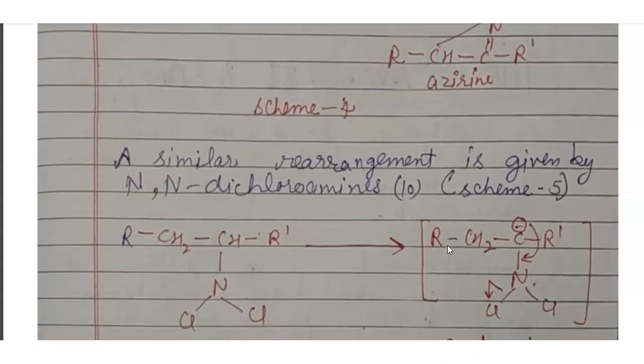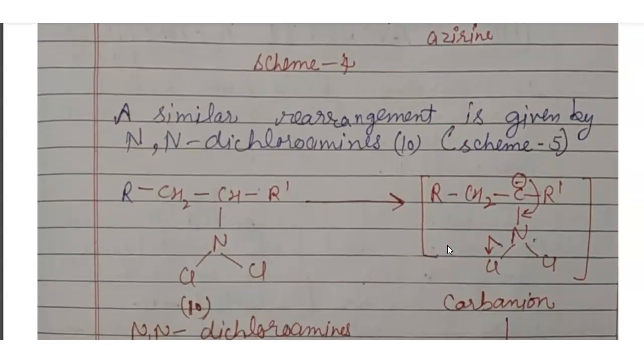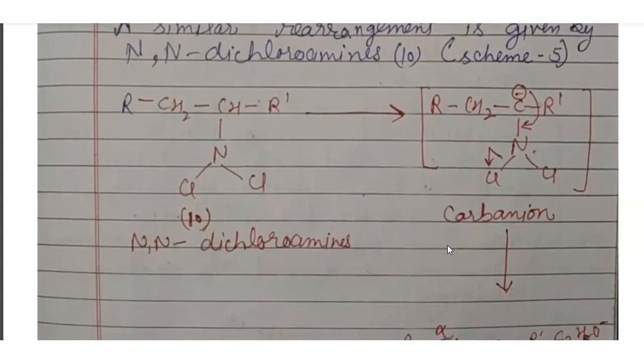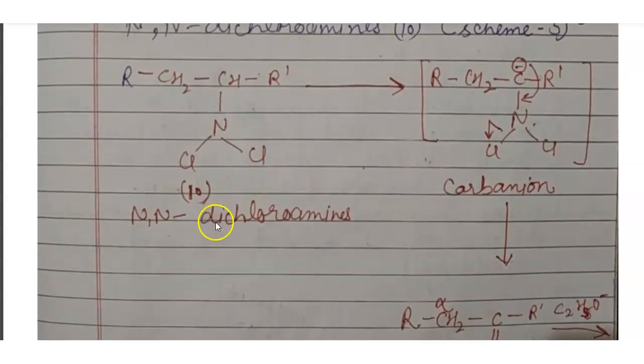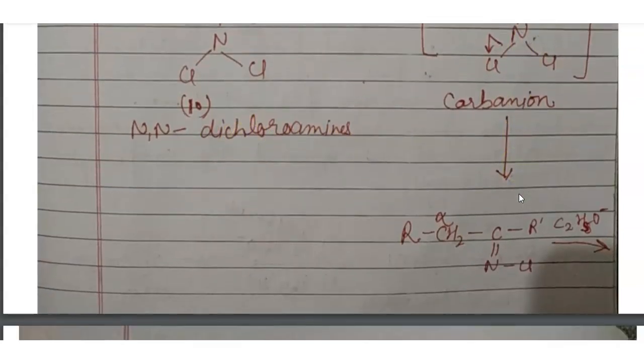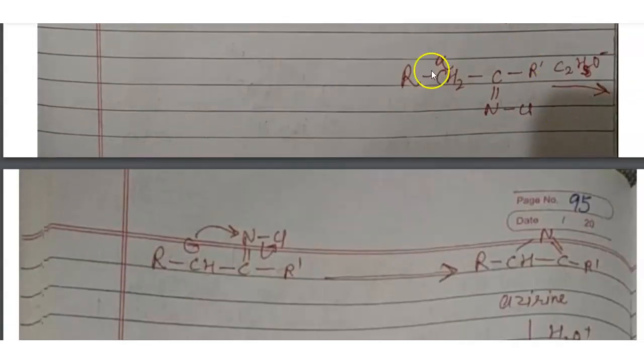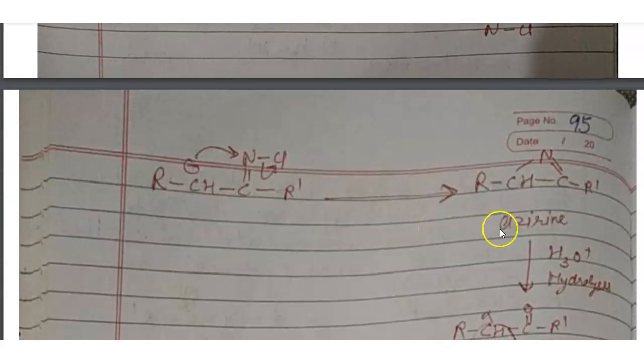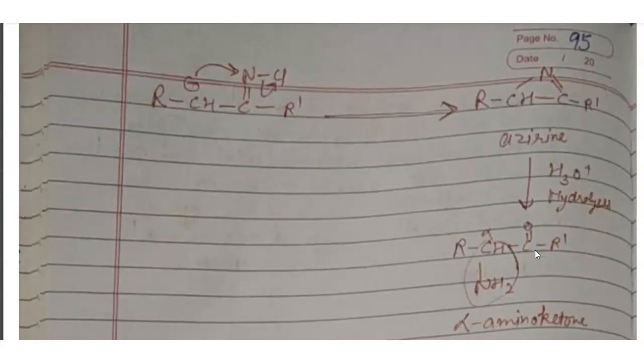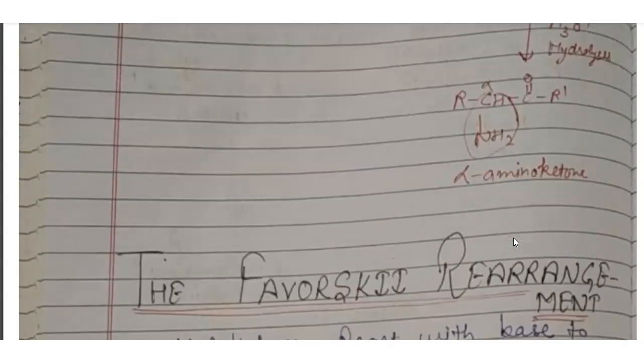The similar rearrangement is given by N,N-dichloroamines. Here is the reaction, then dichloroamines and form, first form carbanion and then form this product and last in this with rearrangement to form azirine. Then, by hydrolysis we will get alpha amino ketone.